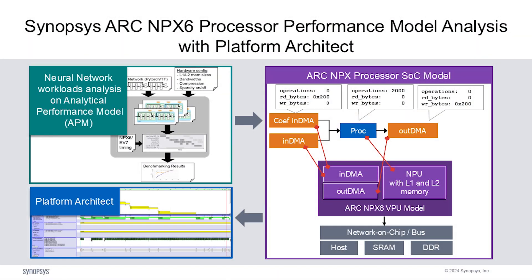We have the MetaWare performance modeling unit — the NPX APM tool — which takes in certain parameters and outputs a stimulus that is converted into the workload you see in Platform Architect. It not only outputs the kind of workload you're going to run, but also gives an estimation in terms of benchmarking results. By running this workload on your larger SOC platform, you're reaffirming those numbers and making sure the analysis is thorough.